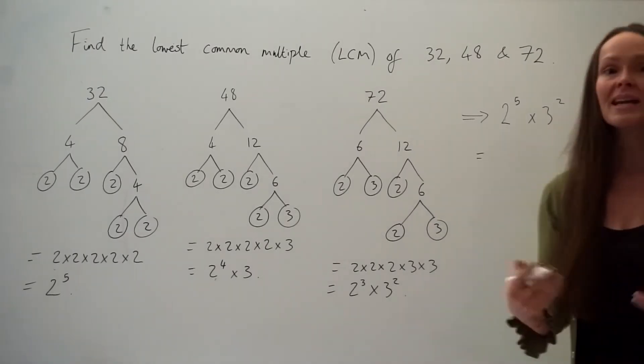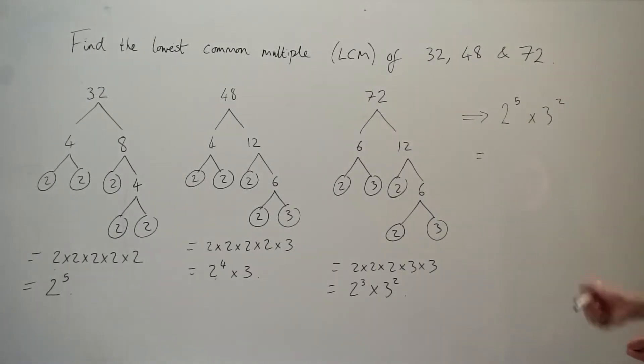Okay, so 2 to the power of 5 is the same as 2 times 2 times 2 times 2 written out five times, and 3 squared is 3 times 3.